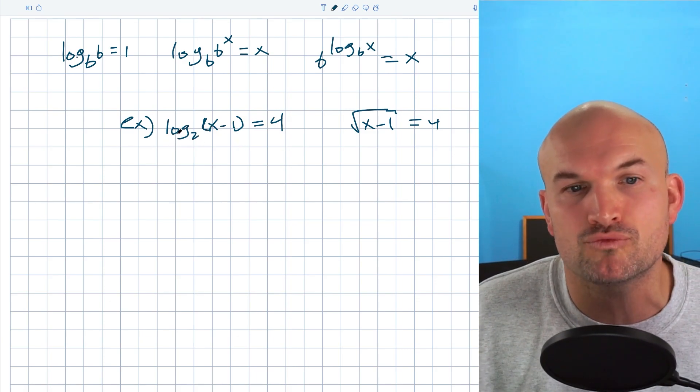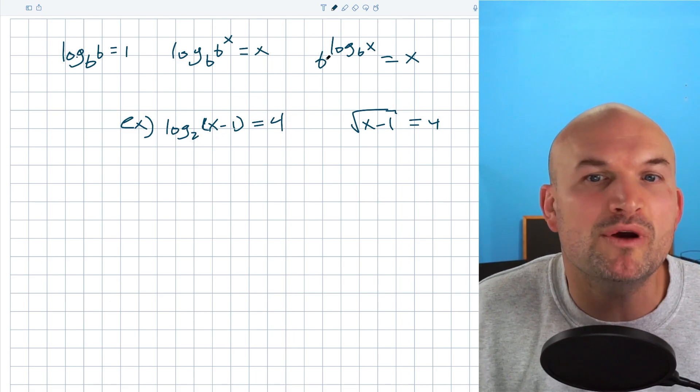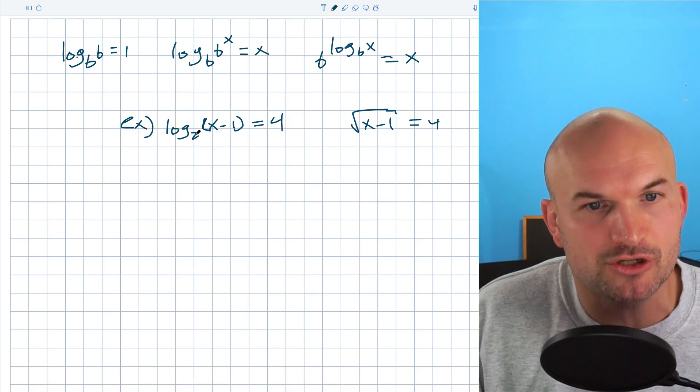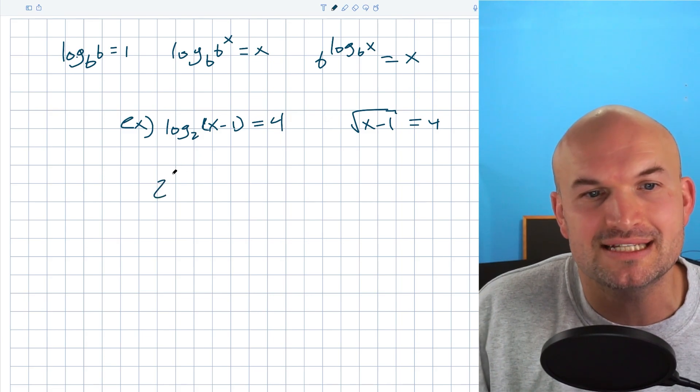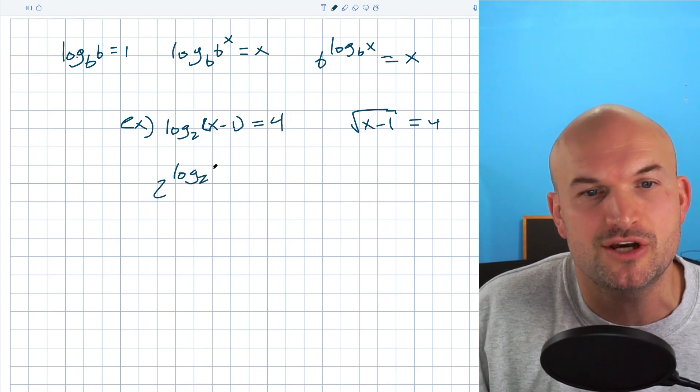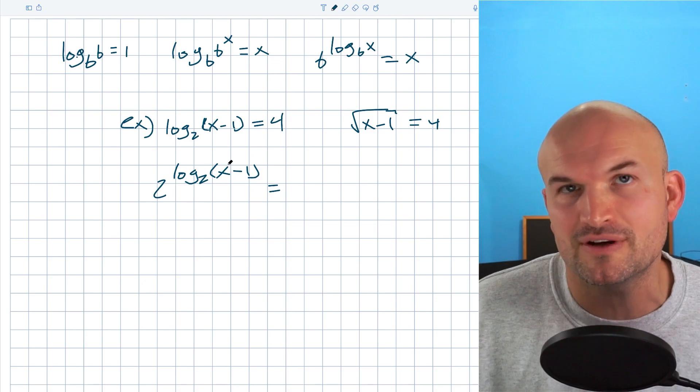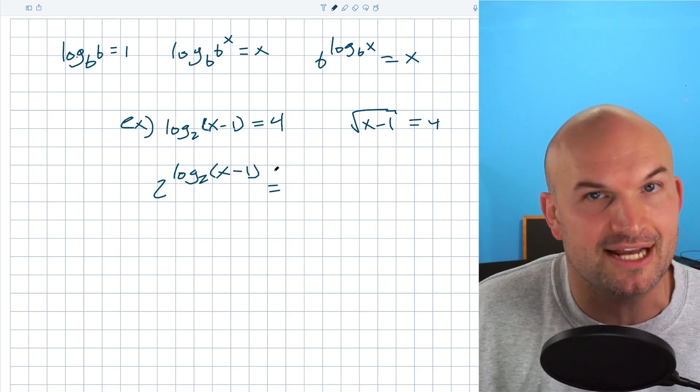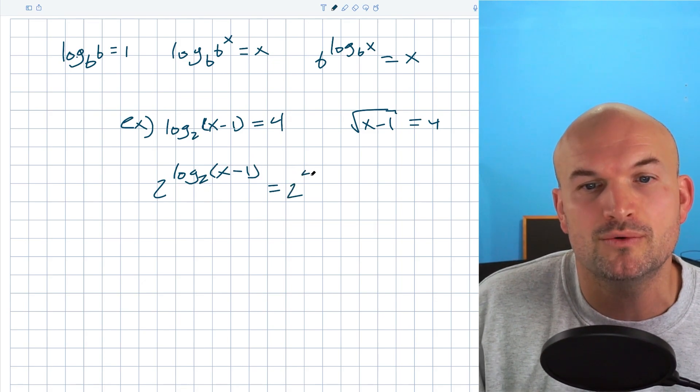So what we're going to do is we don't want to raise this expression raised to any number. We want this to be the same base as our logarithm. So since my logarithm in this case is 2, I'm going to raise that whole expression to a base 2. And then again, remember, don't forget the cardinal rule. Whatever you do on one side, you have to do on the other side. So that's going to be 2 raised to the fourth power.